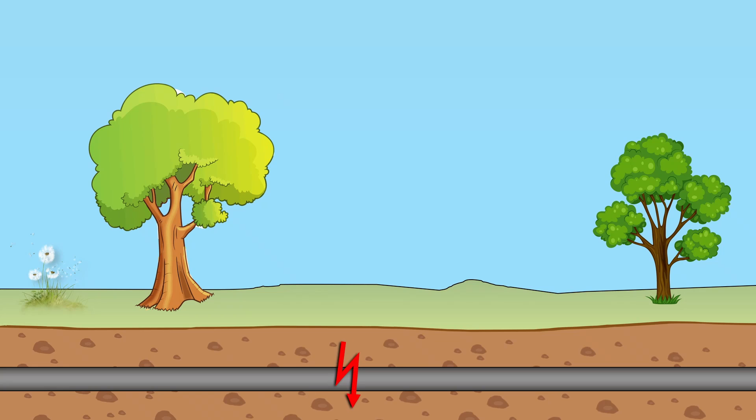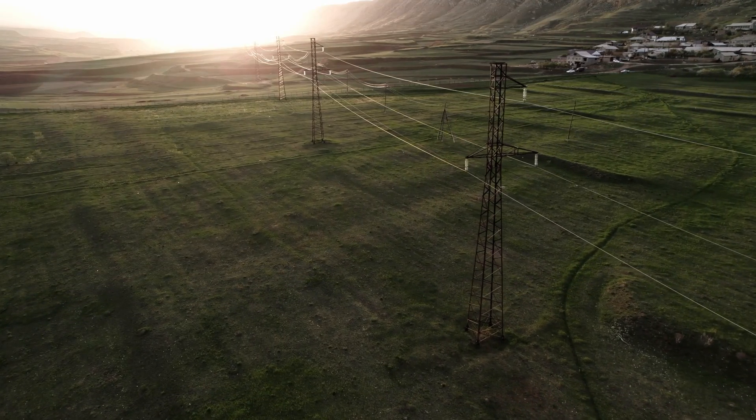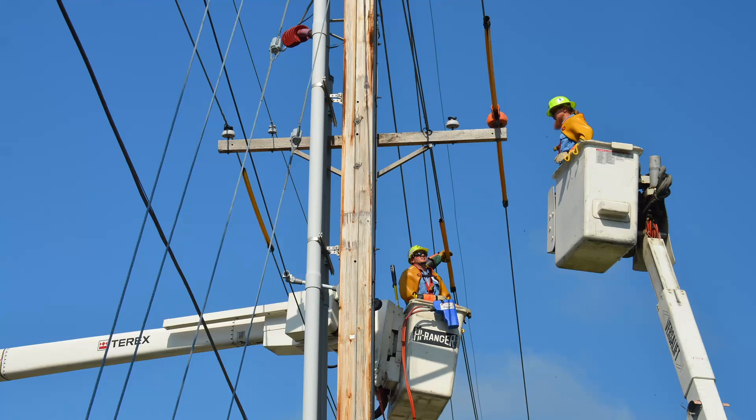Even though underground transmission lines are somewhat immune to weather-related failures, any damage is difficult to pinpoint and repair — it may take a couple of weeks to several months to repair. Damage to overhead lines is easily located and typically takes several hours or days to repair. These two transmission systems have their own advantages and disadvantages.